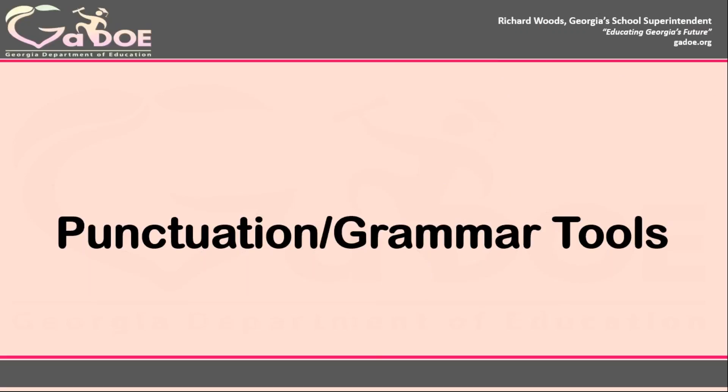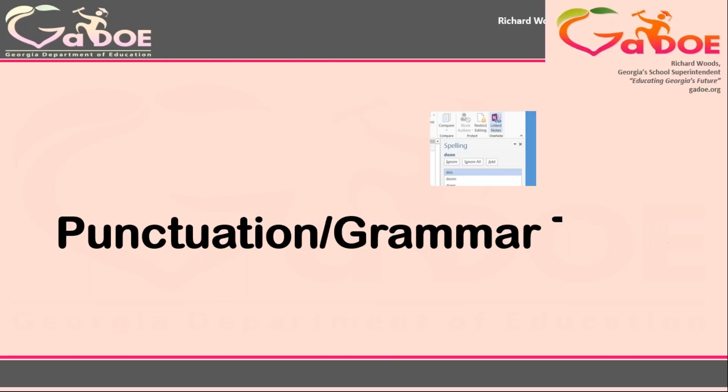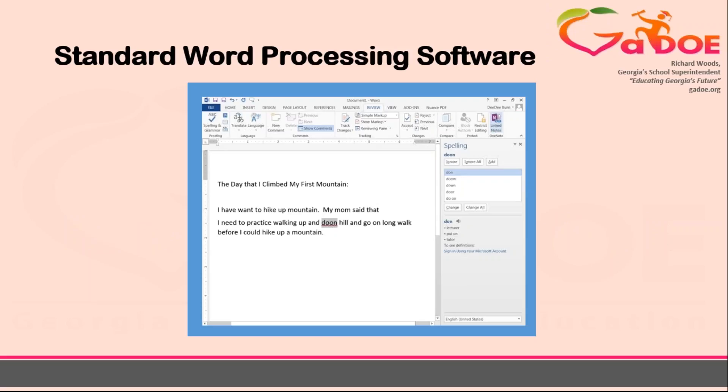Many of the tools mentioned earlier can also be used to support a student with their punctuation and grammar skills. Many word processors can assist students in editing their spelling and grammar in their written products. This is especially helpful for students that are unable to visually edit their handwritten work. Incorporating the use of text-to-speech will also allow the student to listen to their work for edits and revisions, as well as assisting them with organization of their written product.